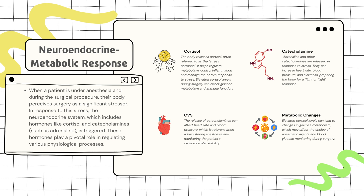These hormones play a pivotal role in regulating various physiological processes. The body releases cortisol, often referred to as the stress hormone. It helps regulate metabolism, control inflammation, and manage the body's response to stress. Elevated cortisol levels during surgery can affect glucose metabolism and immune function.